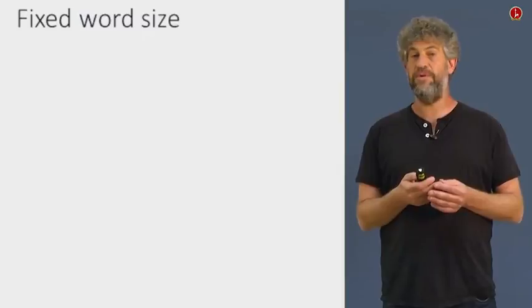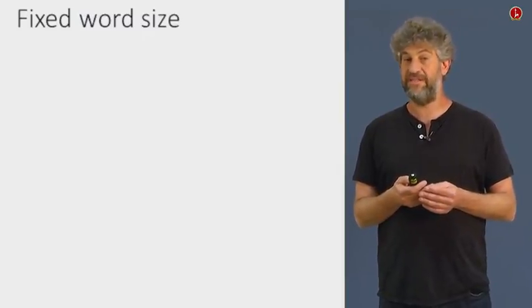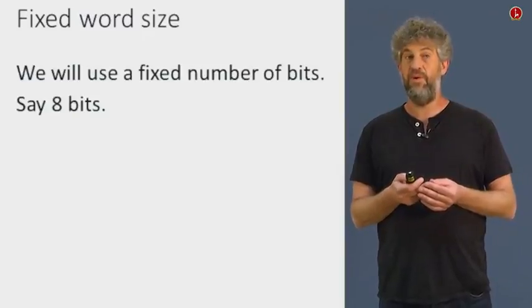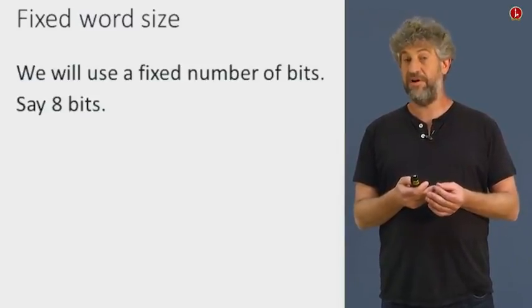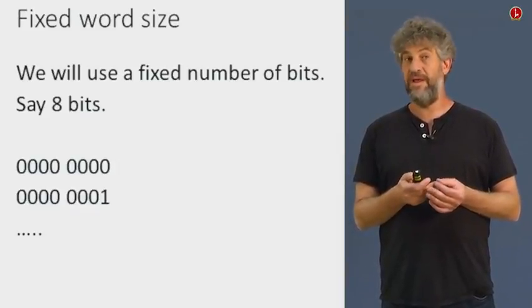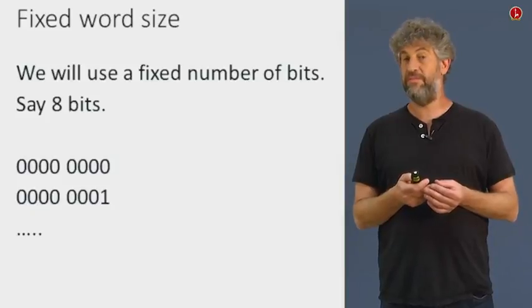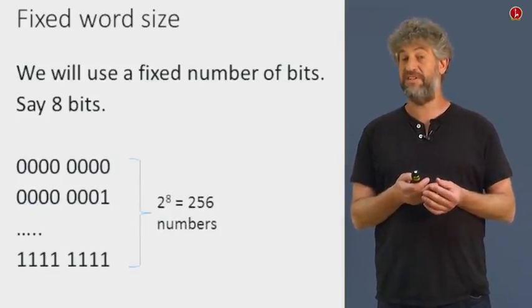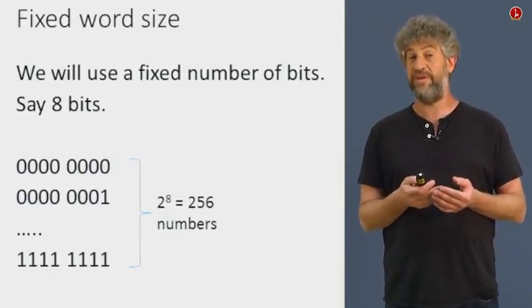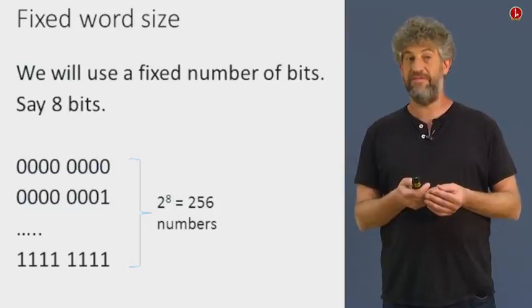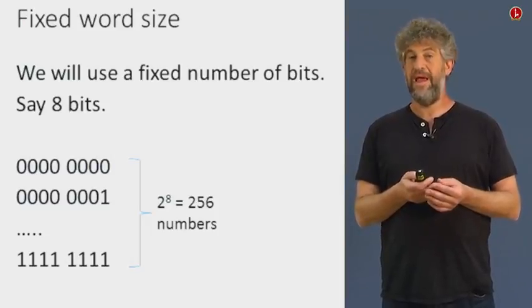So for example, if we only have 8 bits, what are the possible numbers you can represent? Well, you can represent something starting with 0, 0, 0, 8 times, and ending with a 1, all the way up to 8 ones. We have all together 256 such possibilities. The first one is indexed 0, the last one is indexed 255.